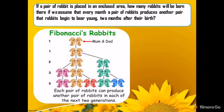Assuming that rabbits begin to bear young two months after their birth: at the start, no rabbits are born as the initial pair has not had time to become pregnant. The first month, one pair of rabbits is born. The second month, again one pair is born as the new rabbits are not yet mature. The third month, two pairs are born. The fourth month, three pairs are born. The fifth month, five pairs are born.